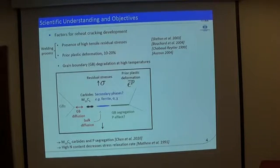And then you have grain boundary degradation at high temperatures while you use your weld. So this is kind of a schematic drawing that shows you the driving forces we think of. So these are the residual stresses, the prior plastic deformation, formation of carbides, diffusion of solute atoms along the grain boundary, secondary phases, and probably segregation of phosphorus on the grain boundary. So segregation of carbides on the grain boundary and phosphorus segregation has been identified to be a problem here.